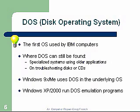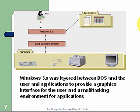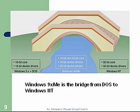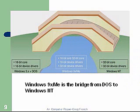Windows 9X/ME uses DOS in the underlying OS. When we went to XP in 2000, or the NT systems, DOS is only emulated — it's not actually part of the operating system anymore. Here's another diagram showing a user with the graphical user interface and DOS as one of the underlying programs. Windows 9X/ME combines the DOS core with the graphical user interface, designed to bridge legacy and newer technologies — backward compatible with older systems while able to accommodate new technologies.